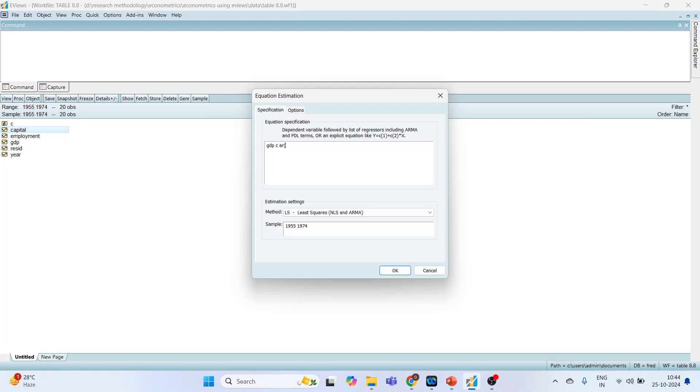Then the AR terms, the autoregressive terms, AR1. And now I will introduce the exogenous variable employment, so employment and its one lag value, employment minus one, one lag. And click OK.